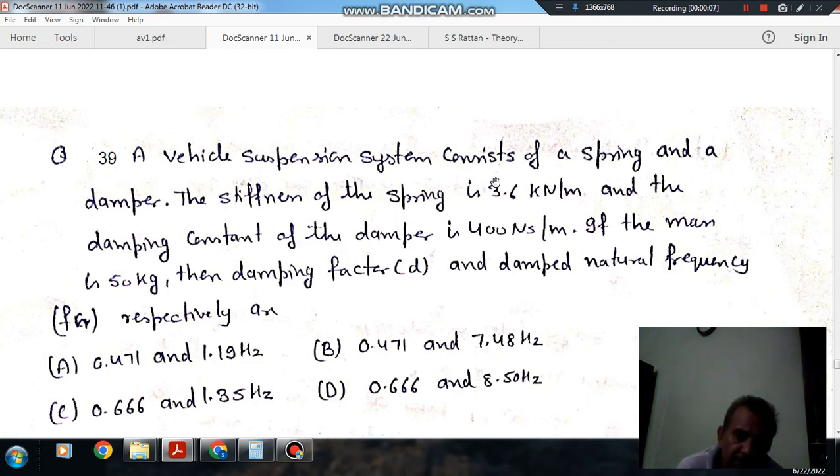Question number 39: A vehicle suspension system consists of a spring and a damper. The stiffness of the spring is 3.6 kN/m and the damping constant of the damper is 400 Ns/m. If the mass is 50 kg, then the damping factor D and the damped natural frequency, respectively, are...